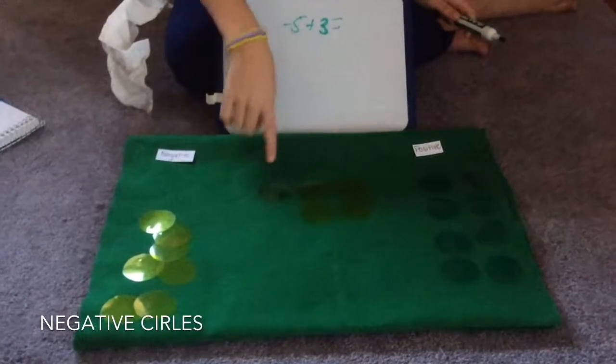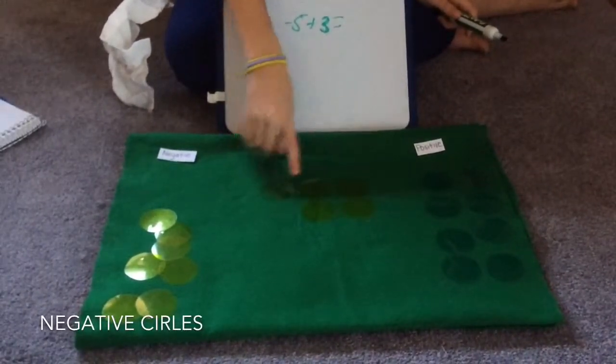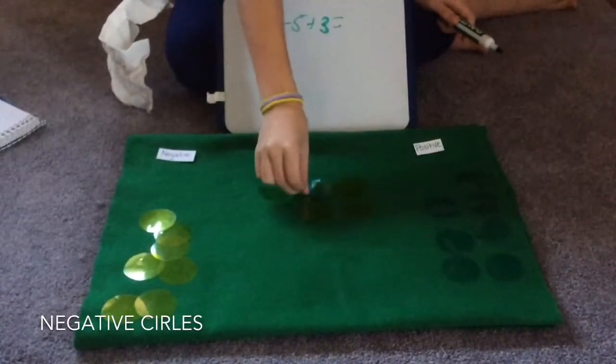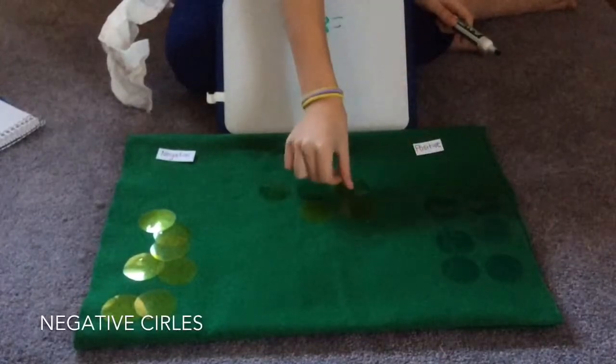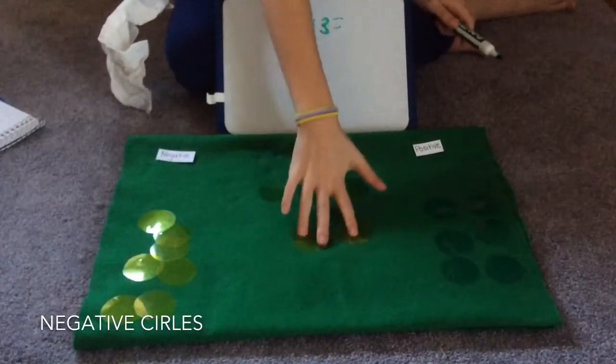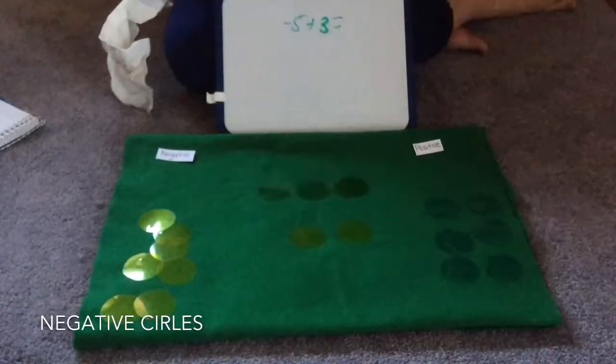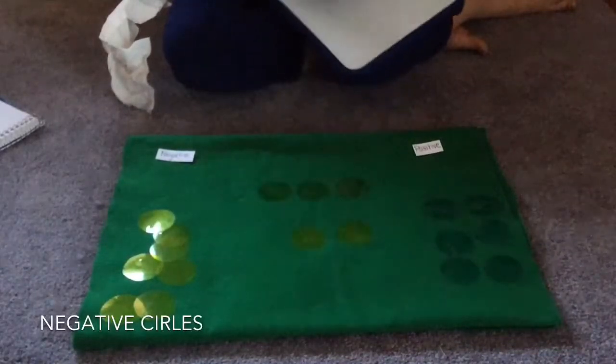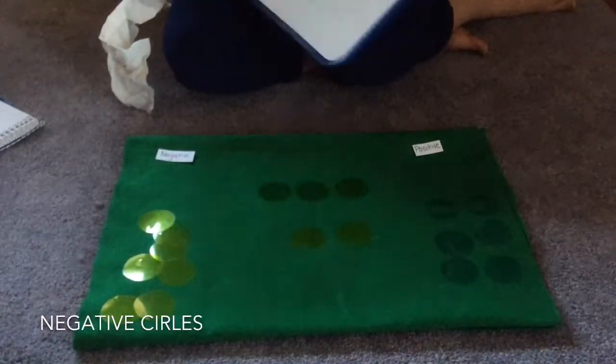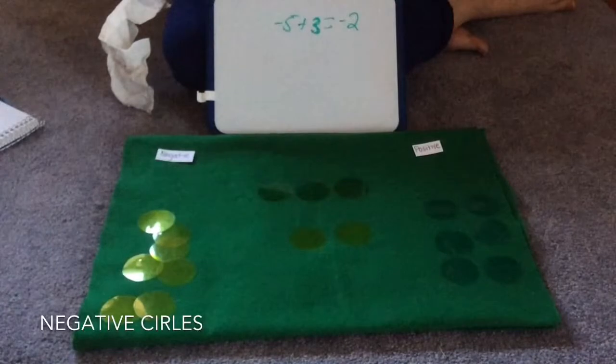And we remember that when you put a negative and a positive together, they cancel each other out. So we put one positive, two positives, three positives. And they completely turned invisible and we're left with two negatives. Negative two is our answer. Works out beautifully.